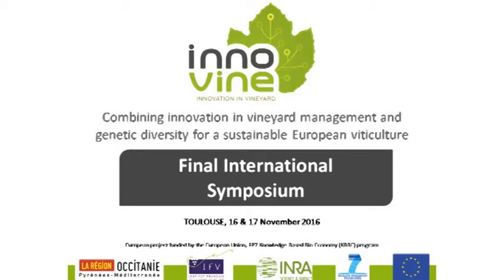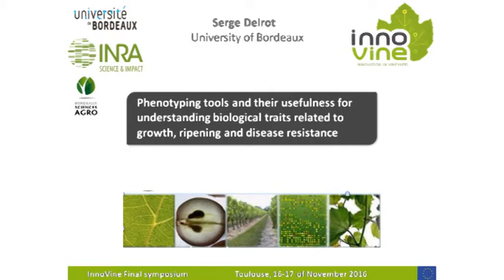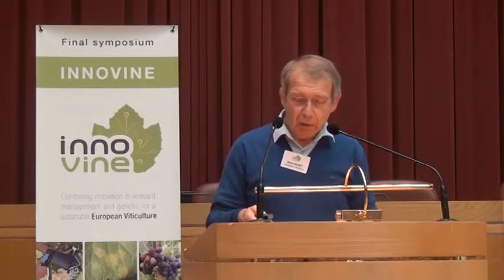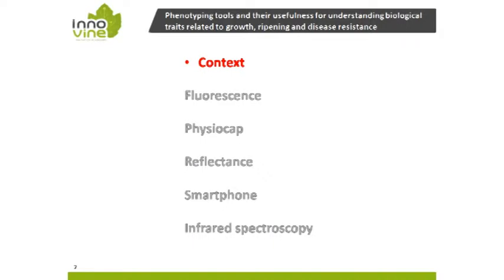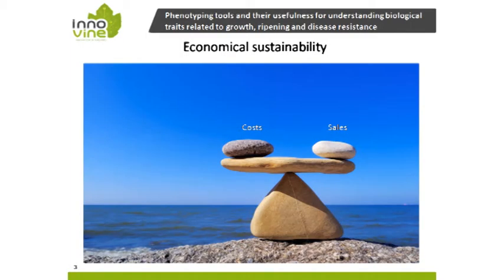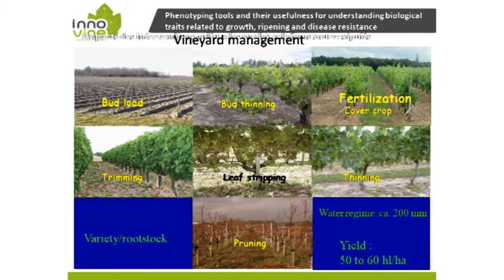I prepared an introductory talk on phenotyping, trying not to overlap with what my colleagues already covered. This is the outline of the talk and I will start with some background information. The aim of a grape grower and winemaker is of course to maintain and improve the economical sustainability of his business, and to this end he may use a lot of viticultural practices, some of which are shown here.